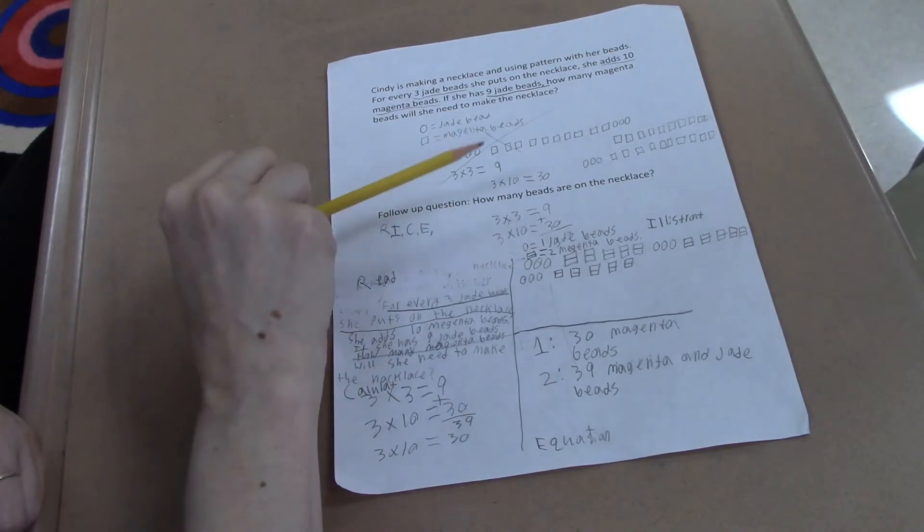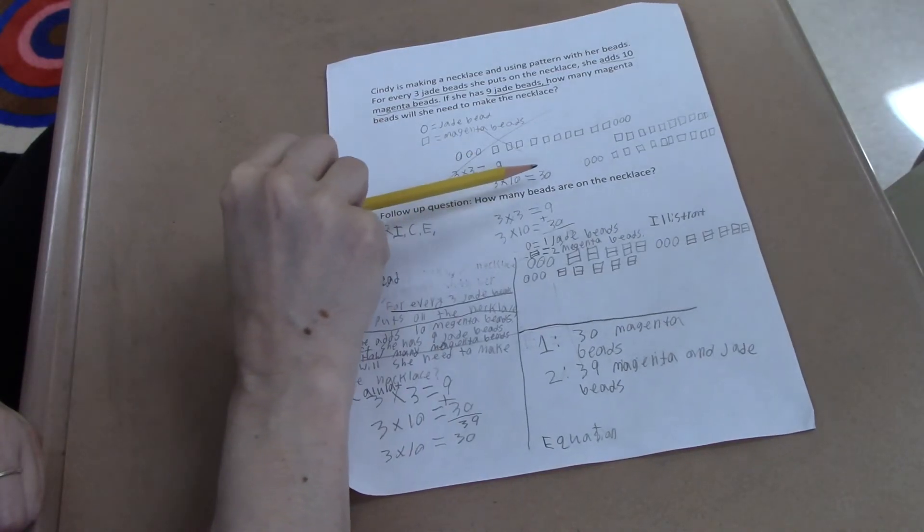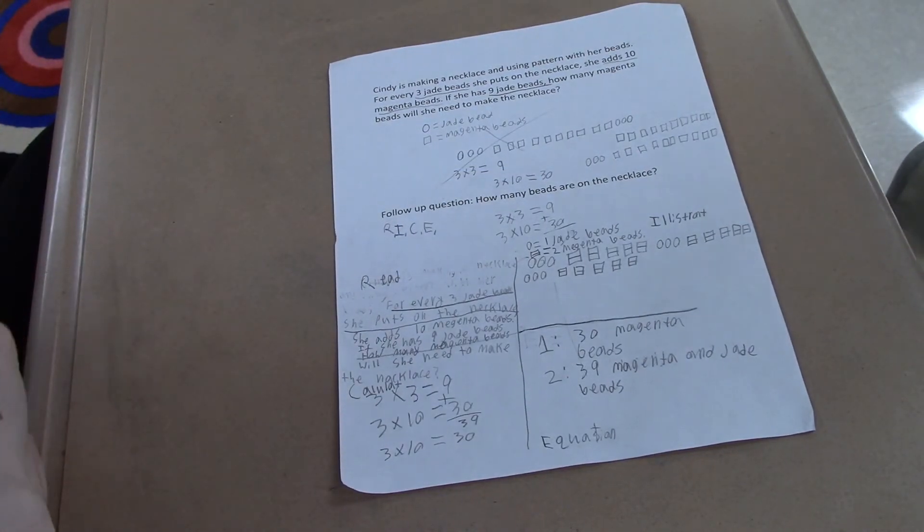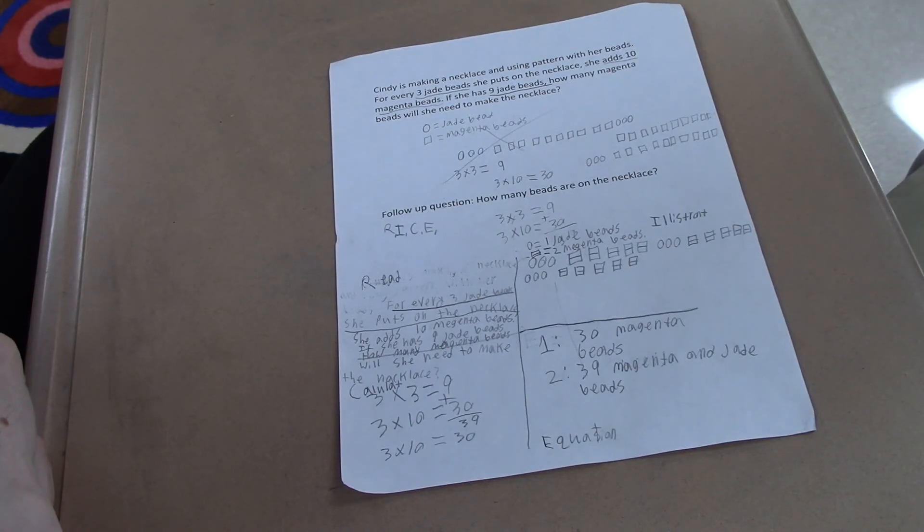you were thinking that three times three equals nine, which is what you had done in the calculate down here, and also the three times ten equals thirty, so you would have arrived at thirty-nine by doing what with these two products? By adding. You got it. Very good.